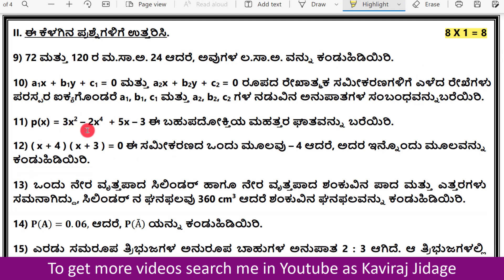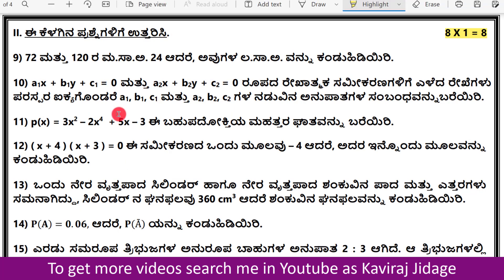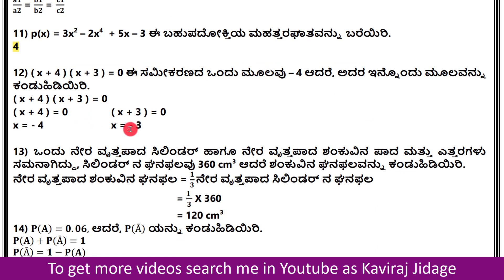For the polynomial p(x) = 3x² − 2x⁴ + 5x − 3, we need to find the degree of this polynomial. Rearranging, the highest power is 4, so the answer is 4.